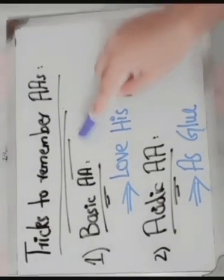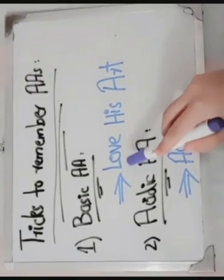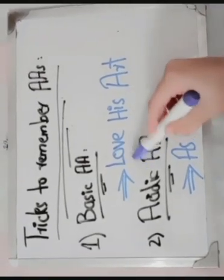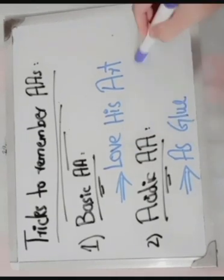As we know, amino acids are classified into two types on the basis of nature: basic amino acids and acidic amino acids. To remember the basic amino acids, we have to remember this mnemonic: LOVE HIS ART. L for lysine, H for histidine, A for arginine. These three are basic amino acids.